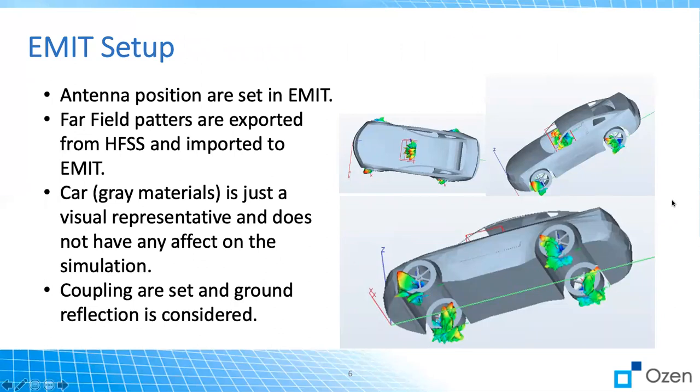So in EMIT, you need to import the antenna parameters and the result, and we did that already. Then you need to locate them, so you tell the software location and position of each antenna. We gave the position to the software and it locates on these different positions for the wheels and in the center for the receiver antenna. Please keep in mind that this car is just for visualization and doesn't have an effect on the simulation results. Even if you take this out, you'll get the same result.